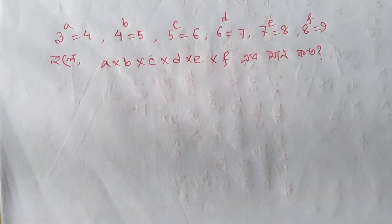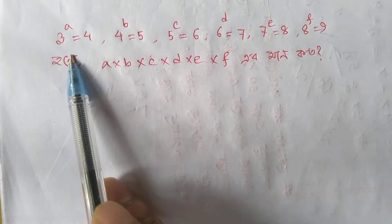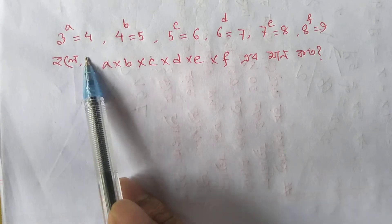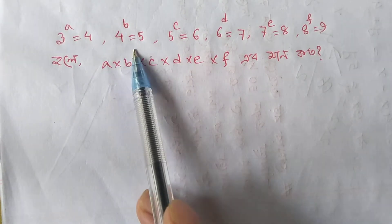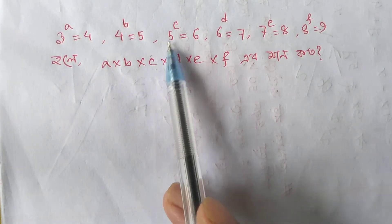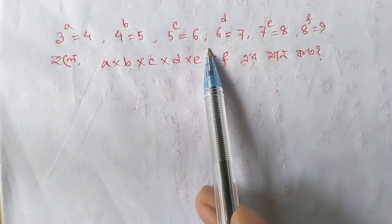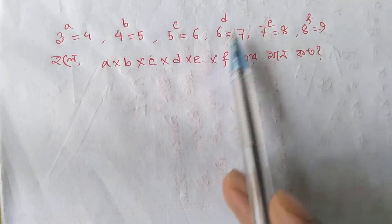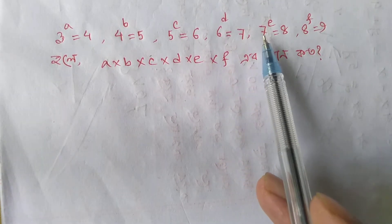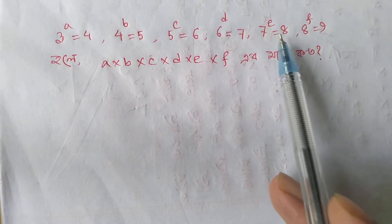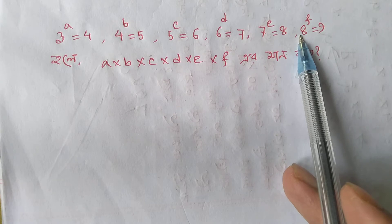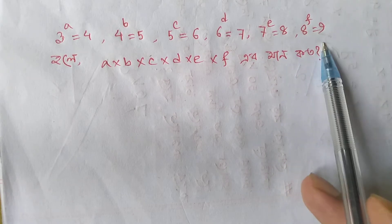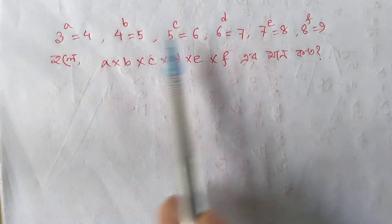Assalamualaikum. 3 to the power A equals 4. 4 to the power B equals 5. 5 to the power C equals 6. 6 to the power D equals 7. 7 to the power E equals 8. And 8 to the power F equals 9.